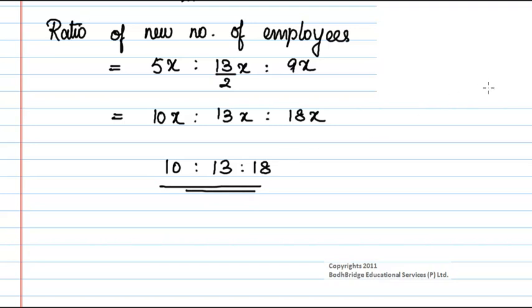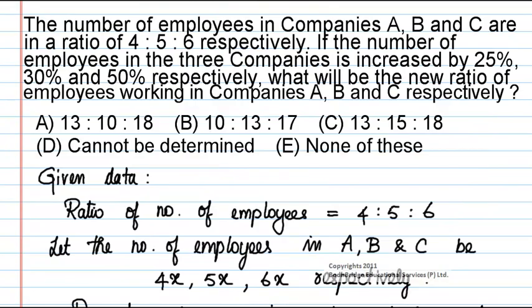This is the ratio of the new number of employees in companies A, B, and C respectively. From the options given, 10:13:18 is not found in A, B, or C. So option E, none of these, is the correct answer.